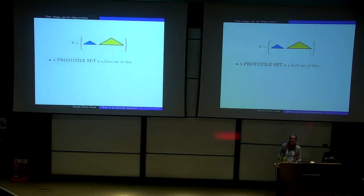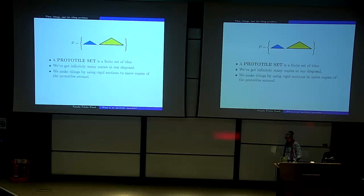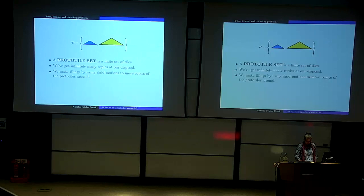A prototile set is just a finite set of tiles. Here I've got a set of two tiles — two sizes of triangles. To make a tiling, you imagine you've got an infinite supply of tiles from this prototype set and you're going to put them together to make a tiling of the plane. You can slide them around, flip them over, or rotate them.